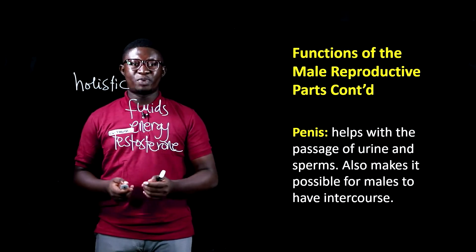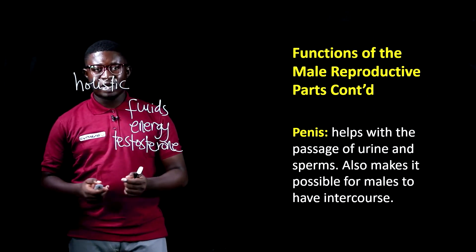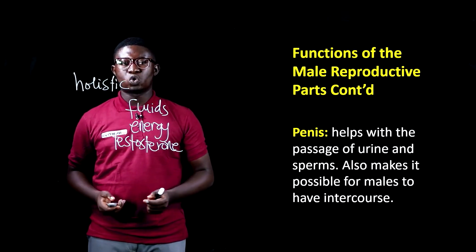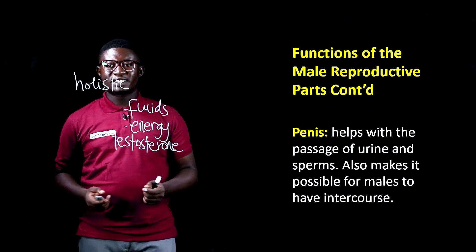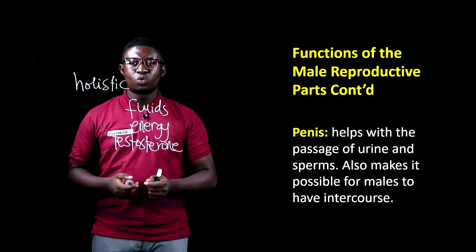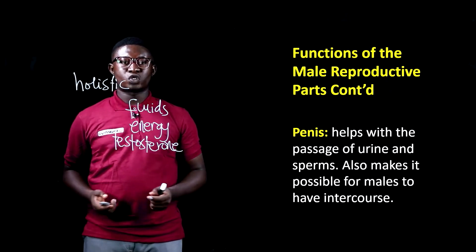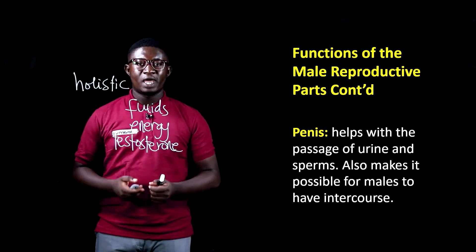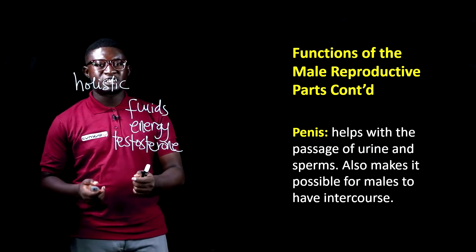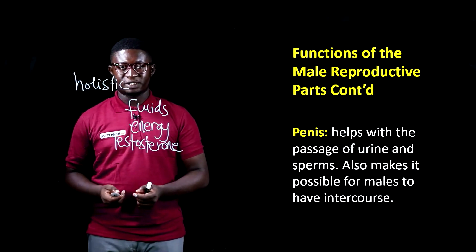Then we look at the penis. The penis helps with the passage of urine and also sperms. It is the part of males which enables them to have intercourse with women and also place sperms in the woman for there to be conception.